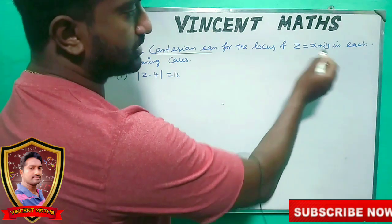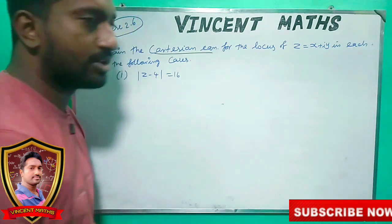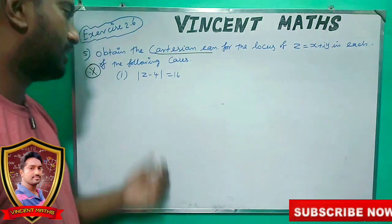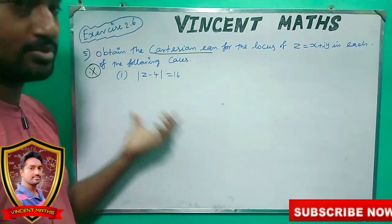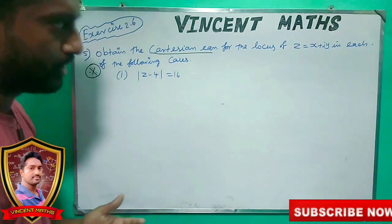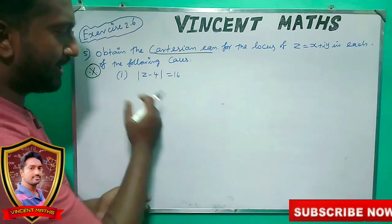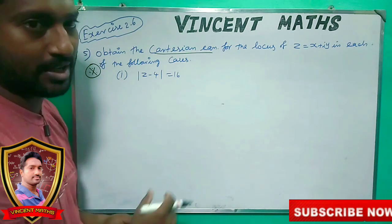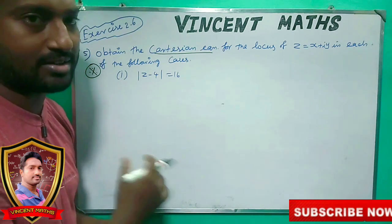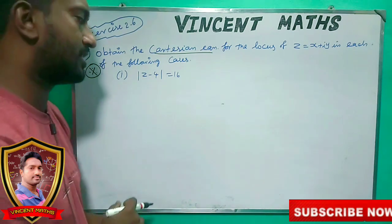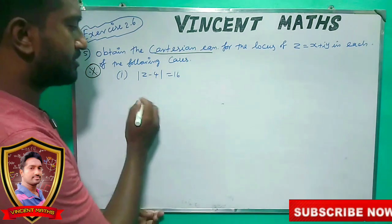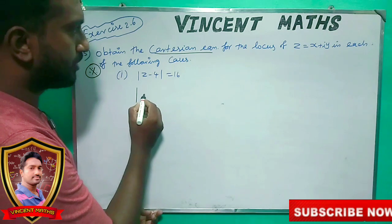If we do that, we can do this in z is equal to x plus y. Now what we do is to do this in 1. Then we can substitute this in z to the z. We can do this in Cartesian format.